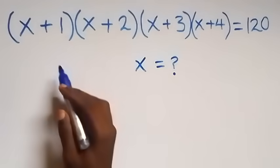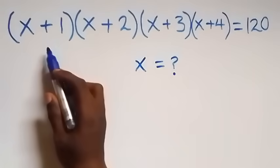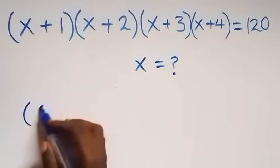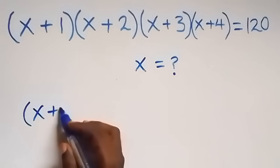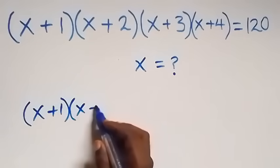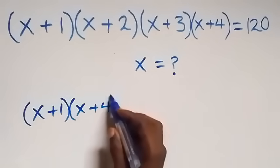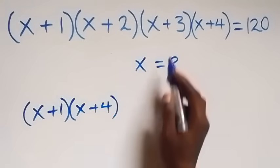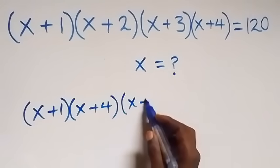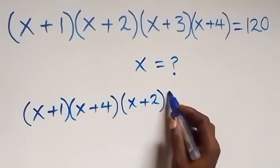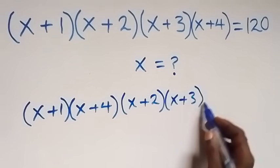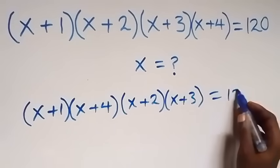For what we are given here, let's rearrange and take x plus 1 and x plus 4 together. So we have x plus 1 multiplied by x plus 4. Then we have x plus 2 times x plus 3 together, which now equals 120 on this side.